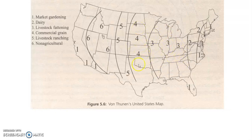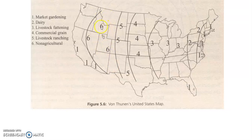Ring five is where a lot of our livestock ranching is — ranches in northern Texas, New Mexico, Colorado, and Wyoming, out on the dry rangeland. Ring six has not a lot of agriculture — Idaho has some potatoes, Montana has some, but there's a lot of desert land through Nevada, New Mexico, and Utah, with a lot of elevation changes, mountains, and plateaus where you just can't do much agriculture.